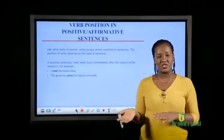The first sentence we shall look at is positive sentences. In positive sentences, main verbs occur immediately after the subject of the sentence. Positive sentences are also known as affirmative sentences — sentences that state facts or that pass information positively. For example, 'I read my books daily.' The main verb 'read' occurs after the subject 'I.' Next, 'the governor gives his reports annually.' The main verb 'gives' occurs after the subject 'the governor.' So in positive sentences, main verbs appear just after the subject.